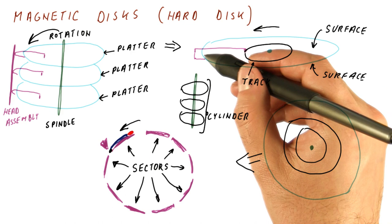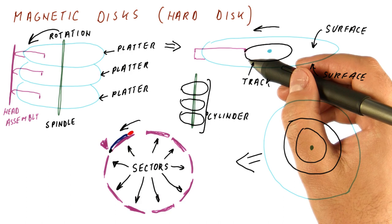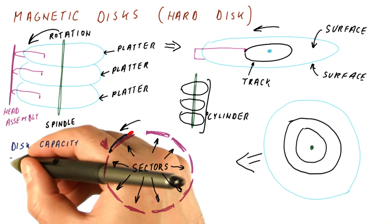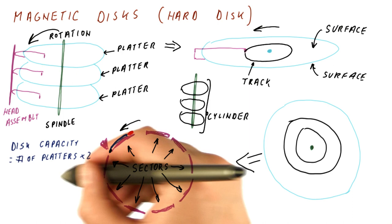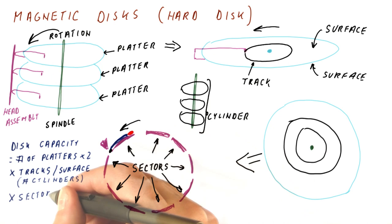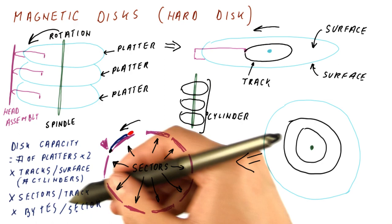So when the head assembly moves to a particular cylinder, then the heads start listening for the beginning of the sector. Once they see the beginning of the sector and see which sector it is, they know where they are in the whole track. So the disk capacity can be computed as the number of platters times two, this would really be the number of surfaces, times how many tracks we have per surface, or expressed in another way, how many cylinders do we have on these disks, times how many sectors do we have per track, times how many bytes of data do we have in each sector.